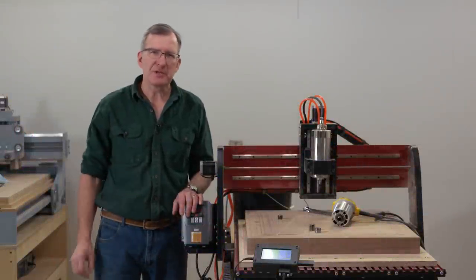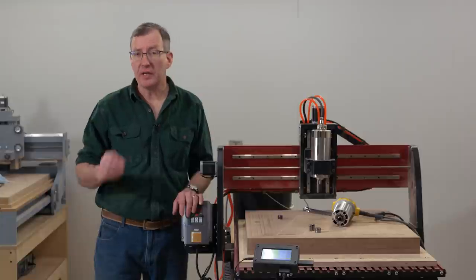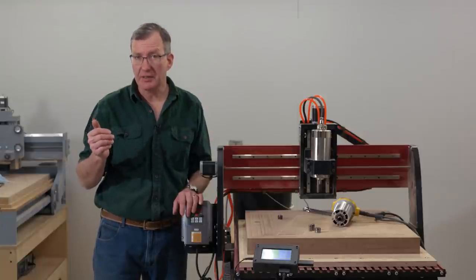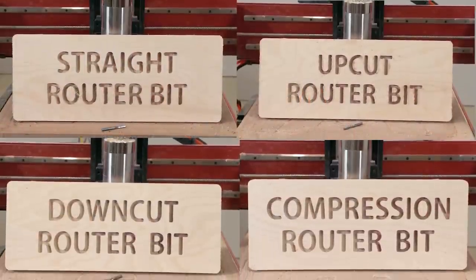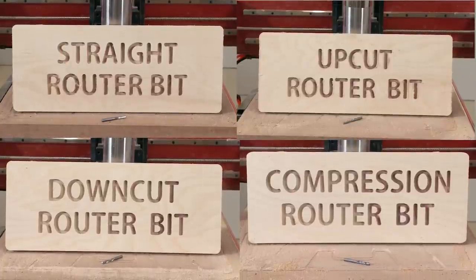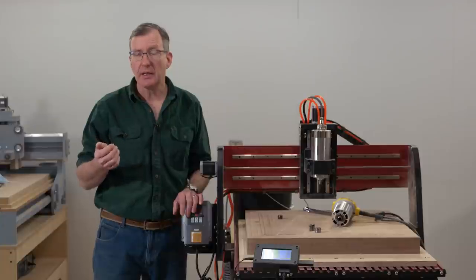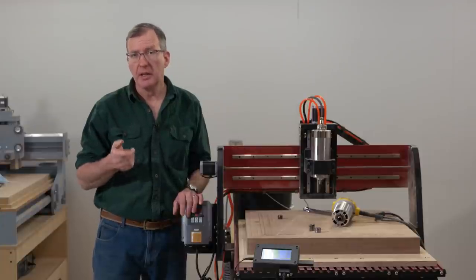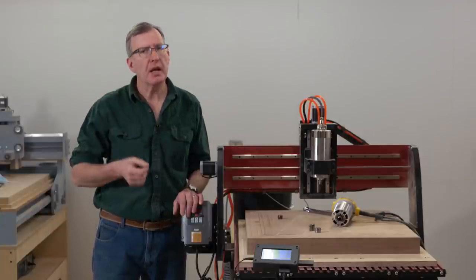To demonstrate the attributes of our router bits, I'm going to have each one - the up cut, the down cut, the straight, and the compression - be used to route a sample board. In that board, there'll be a pocket cut and a profile cut, and with that we'll be able to see exactly how they perform.